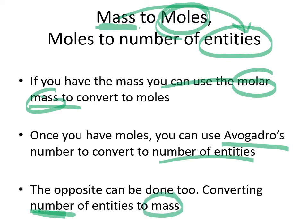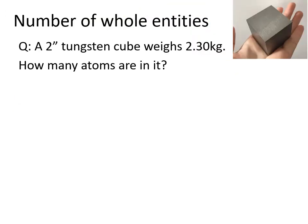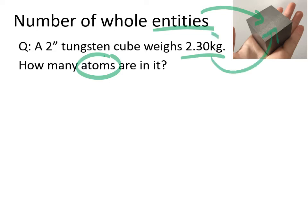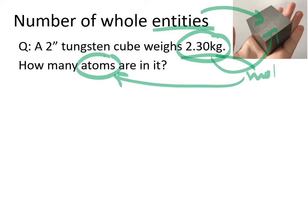For our first example, we're looking for the number of whole entities — atoms specifically — and not pieces of a particular entity. To keep it straightforward, we're dealing with a metal, so the pieces are just atoms. If a two-inch tungsten cube weighs 2.3 kilograms, how many atoms would be in that cube? We start with mass, convert to moles, and then convert moles to atoms.